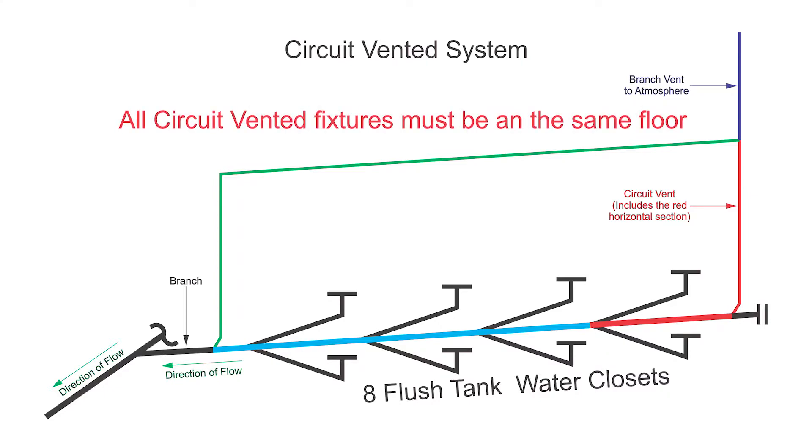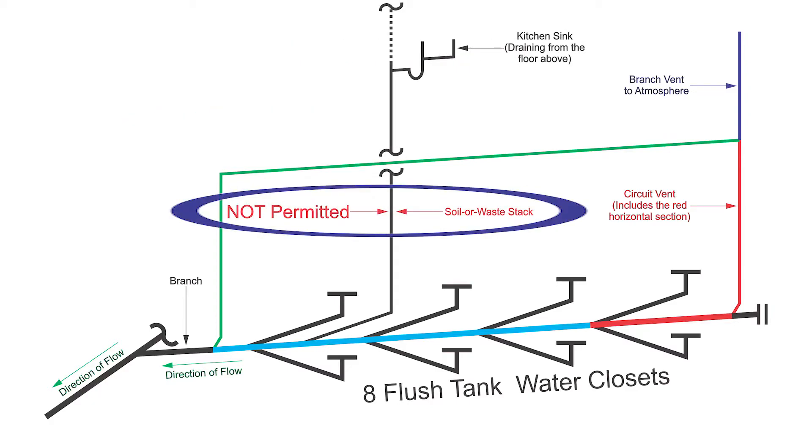Part B suggests that all the fixtures that connect to the circuit vent are connecting to it on the same story, meaning you can't have some fixture upstairs draining down into it. That also speaks to Part C. A soil away stack is a drain pipe that passes through a full story, or drains through a full story. We cannot connect that into the circuit vented area here, and that is anywhere between here and here on this picture.